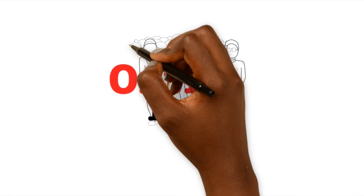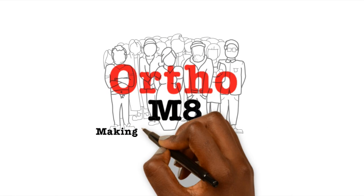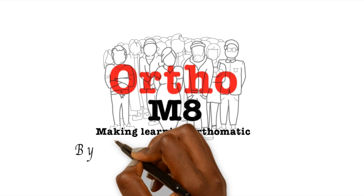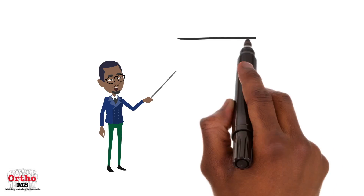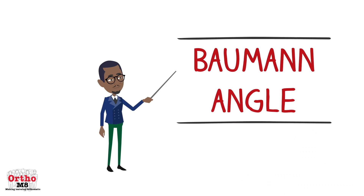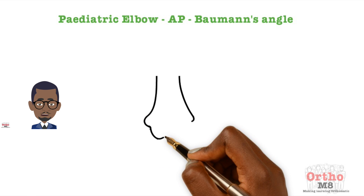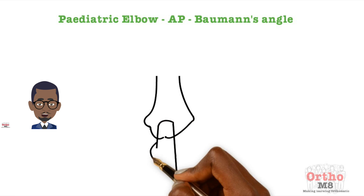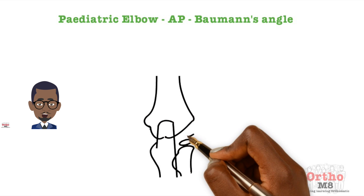Welcome to Wolframeda — making learning automatic by Harry Benjamin Lang. Today's topic is the Baumann's angle, which is the angle between the long axis of the humeral shaft and the lateral condylar physis, measured radiologically.